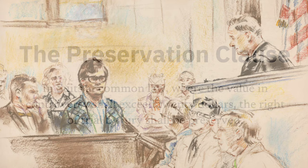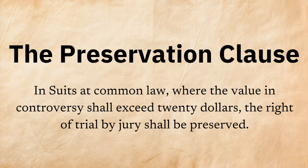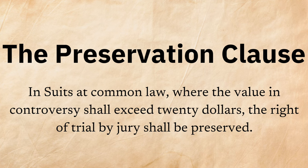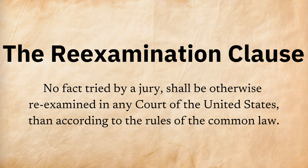The Seventh Amendment contains two clauses: the Preservation Clause and the Reexamination Clause. The Preservation Clause involves trial by jury in civil cases. It says: 'In suits at common law where the value in controversy shall exceed $20, the right of trial by jury shall be preserved.' The Reexamination Clause says: 'No fact tried by a jury shall be otherwise reexamined in any court of the United States than according to the rules of the common law.'